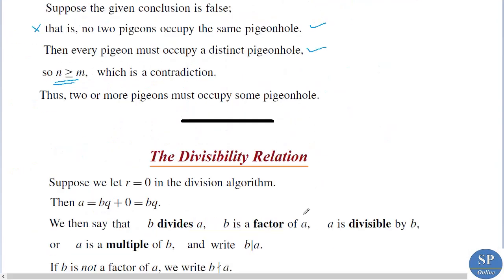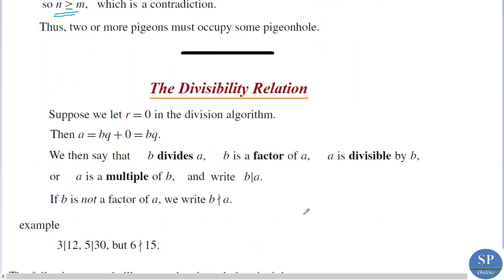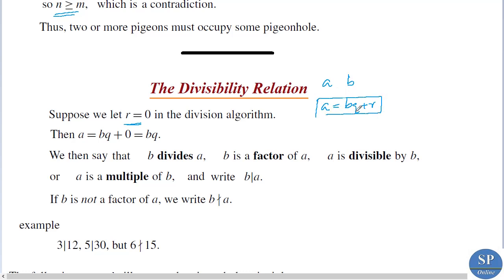Now, the divisibility relation. The divisibility relation comes from the division algorithm. We have a equal to bq plus r, where q is the quotient and r is the remainder.